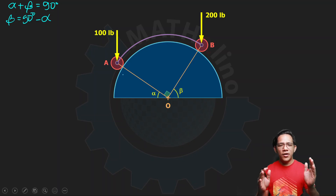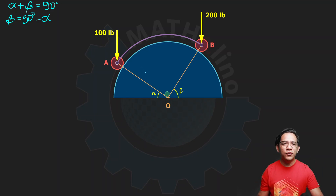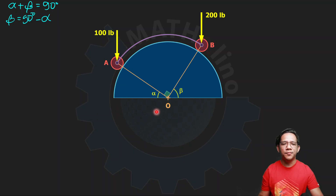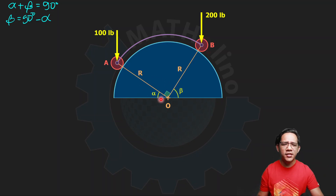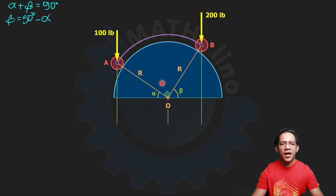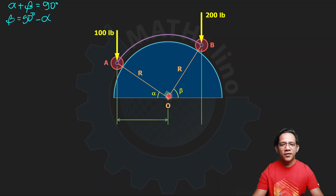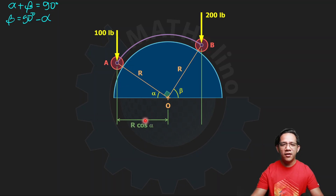To define the equation of equilibrium, we need to write the rotation of these two forces about point O. The moment of a force is the magnitude times the moment arm. If we call the distance from point O to the center of A and B as R, then the moment arm is the perpendicular distance from the line of action of the force to the moment center. From the figure, this is cosine — adjacent over hypotenuse — therefore R cosine alpha and R cosine beta.